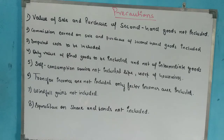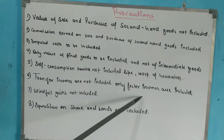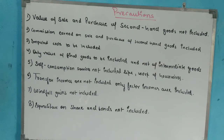Transfer incomes are not included; only factor incomes are included. Transfer incomes like pension and scholarships are not included in national income calculation because no production activity occurs from them. Factor incomes, on the other hand, are paid to factors of production in exchange for their services, which creates production and generates income in the country — so these are included.